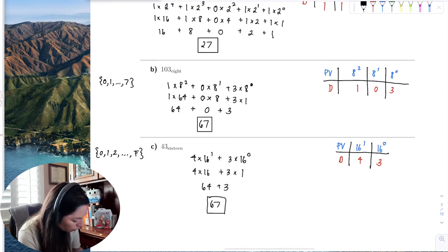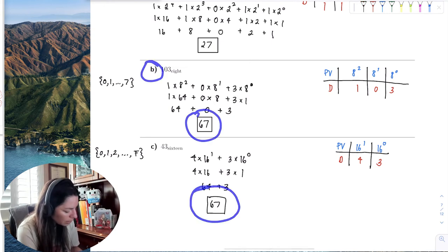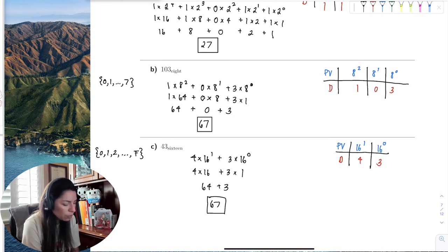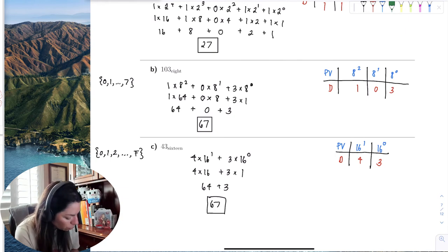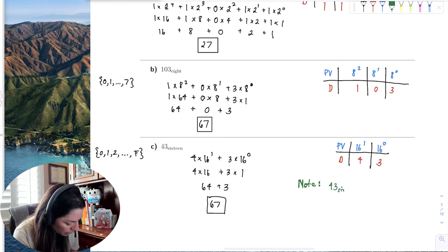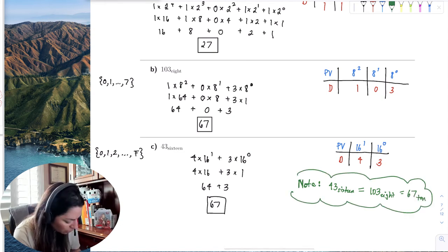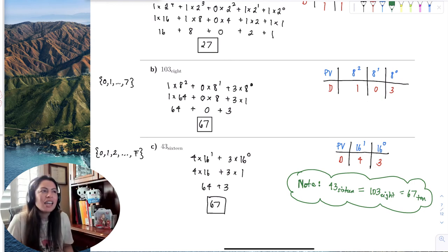Whoa, I just got 67 for part B. How could I get 67 again? And they're both base 10 numbers. Well, get this. 103 in base 8 is equivalent to 67 in base 10, which is equivalent to 43 in base 16. So note that 43 in base 16 is equivalent to 103 in base 8, which is equivalent to 67 in base 10. You just found equivalent numbers all the way through. That's pretty cool.